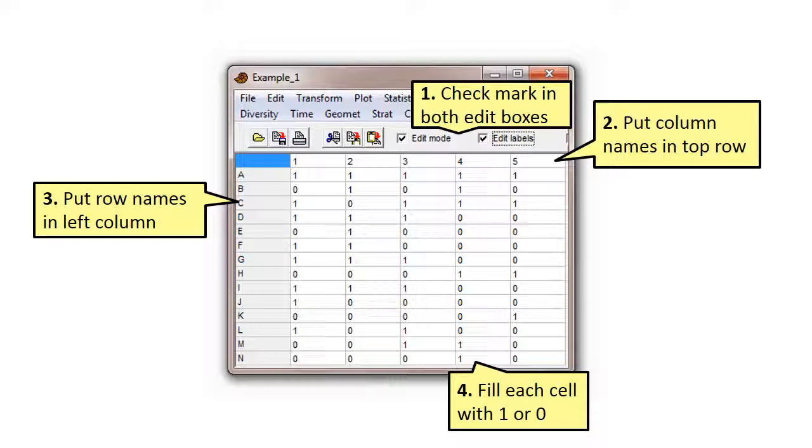The first thing to do is to put a check mark into each of the two edit boxes near the top of the window. When these boxes have a check mark, you are able to type into the body and margins of the spreadsheet.